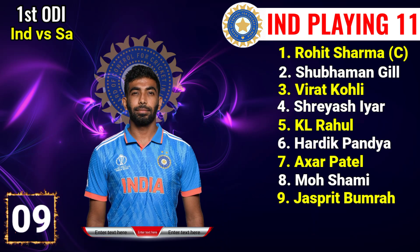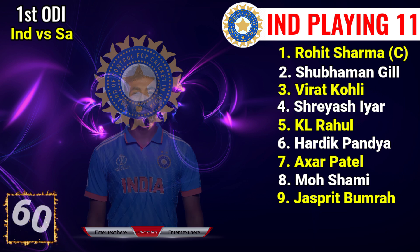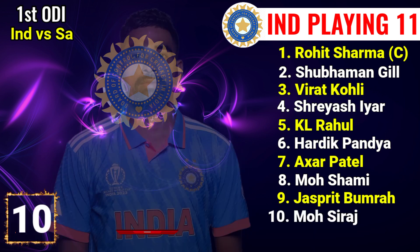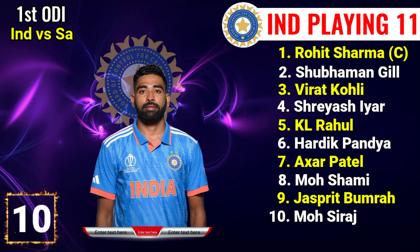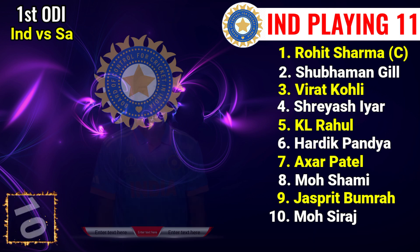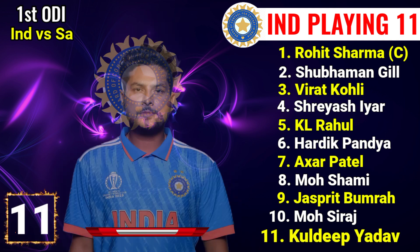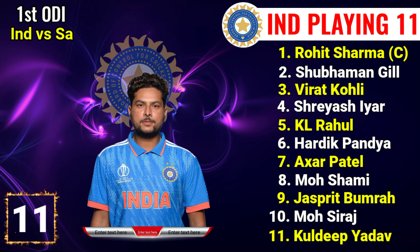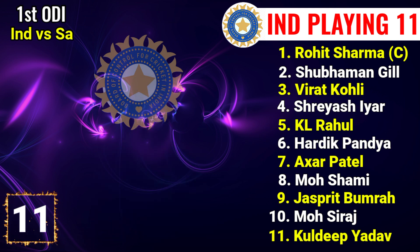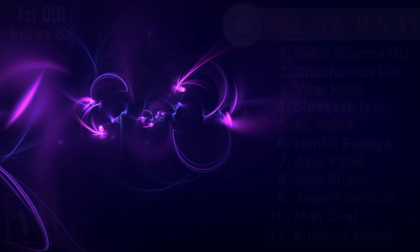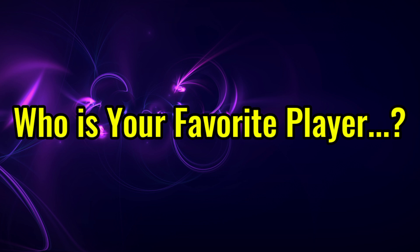No.9 Jasprit Bumrah, right-hand fast bowler. No.10 Mohammed Siraj, right-hand fast bowler. No.11 Kuldeep Yadav, left-arm spinner. My dear friends, who is your favorite player? Please tell me in the comment box.